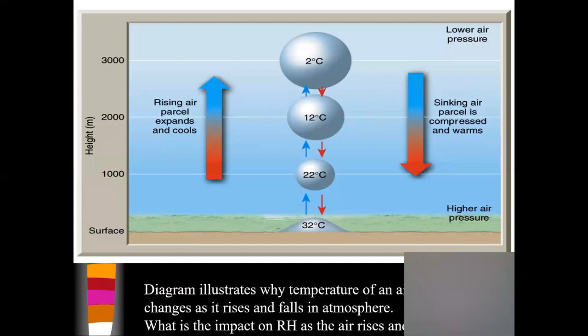This just shows adiabatic temperature changes. As the air rises it's going to cool, and we see the bubble expanding, so cooling is going to take place. As the parcel sinks back to the surface, it will warm up at the dry adiabatic rate — lower air pressure as it gets higher, higher air pressure as it sinks lower.